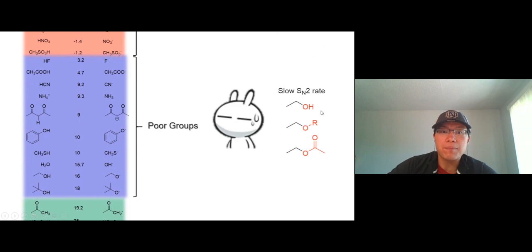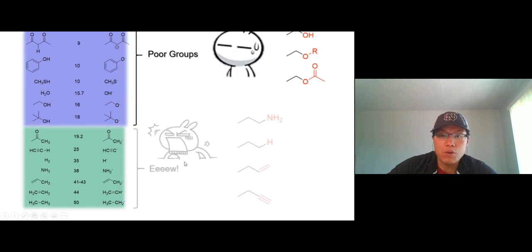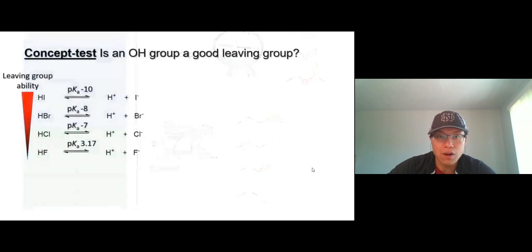Down here, these are poor leaving groups. They don't really want to leave. You don't really see these guys leave quite a lot. We have acetate, ammonia doesn't really want to leave, especially hydroxide. If you remember phenol, this is phenoxide, not really wanting to leave. Hydroxide is a really, really bad leaving group in all the alcohol stuff down here. And down here, this is the worst leaving group. You've never seen like an amine group, hydrogen, an alkene, alkyne leave an alkyl group. You've never seen this.